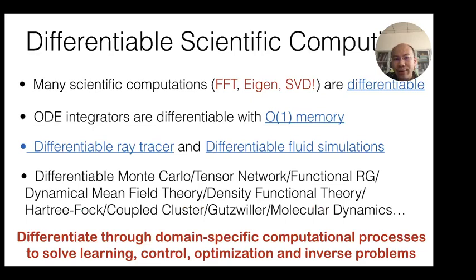With all this preparation, it's time to think about differentiable scientific computing. Many elementary scientific operations like Fourier transform, eigensolver, SVD are all differentiable. Using these, people built differentiable research in fluid simulation. In our domain, I think it's time to think about differentiable Monte Carlo, tensor networks, DFT, molecular dynamics - many domain-specific computation processes. This allows us to do learning, control, optimization, and solve inverse problems much easier than before.